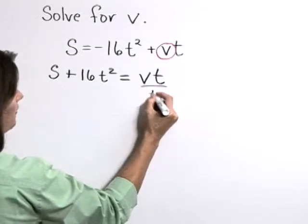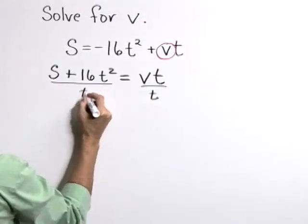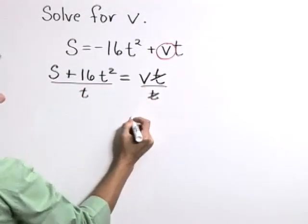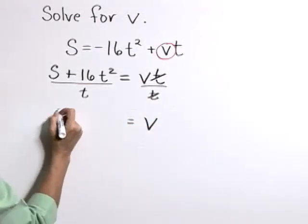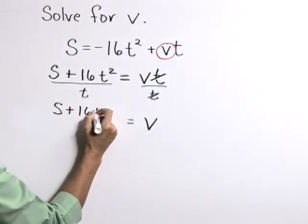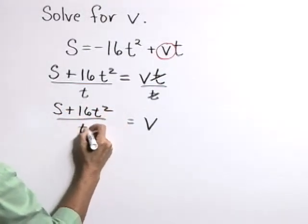So as a next step, let's divide both sides by t. This isolates v on one side. So v is equal to s plus 16 t squared over t.